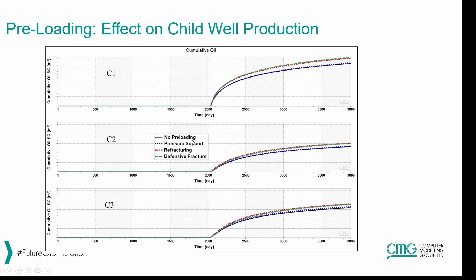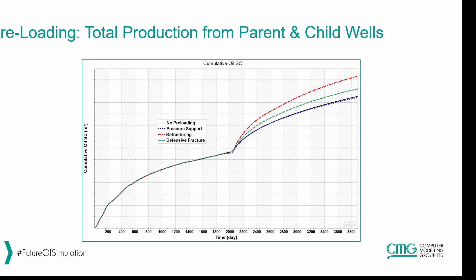Looking at child well production, the pressure support case again has almost no impact. However, the refracturing and defensive fractures approaches both have a very similar impact on child well production, with a clear uplift in oil production for both techniques. When we look at total production from both parent and child wells, refracturing provides the highest increase in oil production, followed by proppant-less refracs. The pressure support case has no tangible impact on production and is unlikely to be economical based on these results.